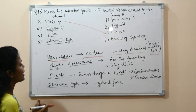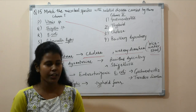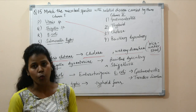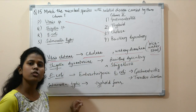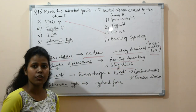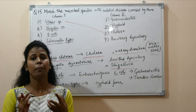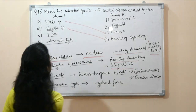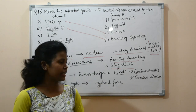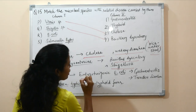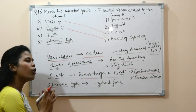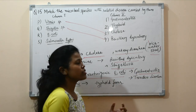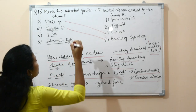Shigella dysenteriae causes bacillary dysentery, also known as shigellosis. It is transmitted through contaminated food and water and causes severe dysentery with symptoms including fever, abdominal pain, blood in stool, and mucus in stool. Next, E. coli — specifically enterogenic E. coli — causes gastroenteritis, also called traveler's diarrhea. Not all E. coli species are harmful, but certain strains cause gastroenteritis.